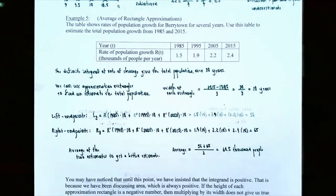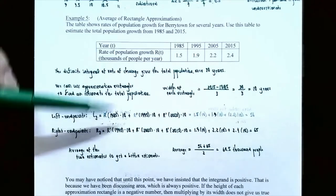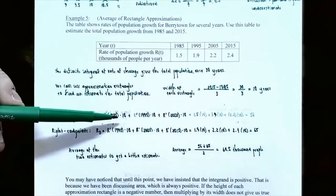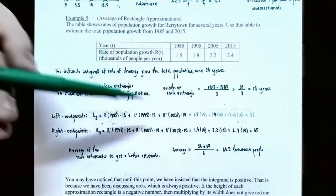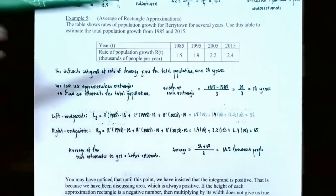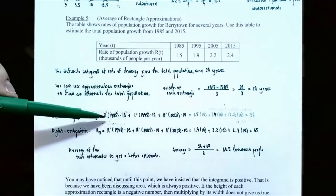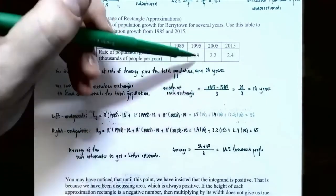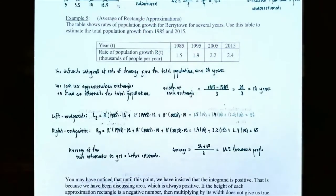Using left endpoints with three rectangles, L sub 3 equals R'(1985) times 10 plus R'(1995) times 10 plus R'(2005) times 10. Substituting table values: 1.5 times 10 plus 1.9 times 10 plus 2.2 times 10, which equals 56 thousand people.